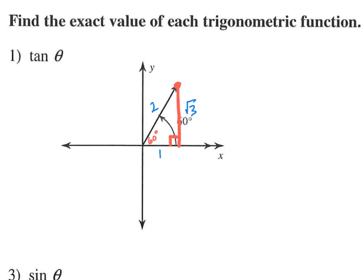And since tangent is opposite over adjacent, the opposite side of 60 is root 3. The adjacent side, we have 1 or 2. They're both adjacent, but 2 is the hypotenuse, so 1 is our adjacent side. So we have root 3 over 1, and that simplifies to just root 3. So tangent θ is root 3.